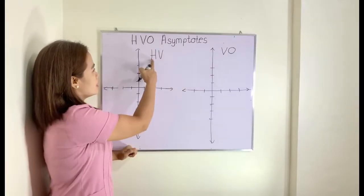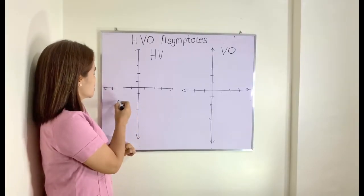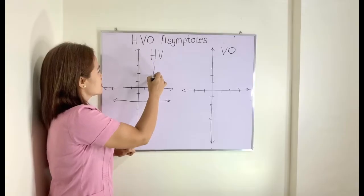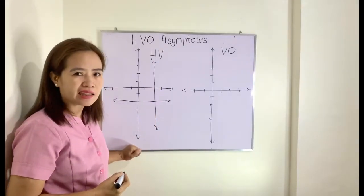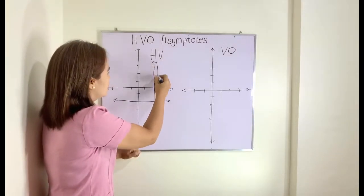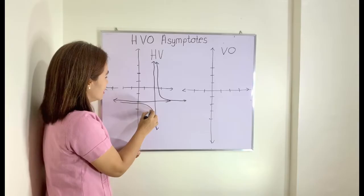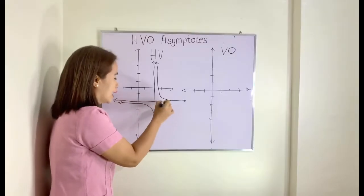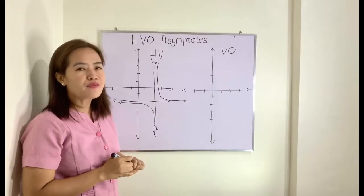HV means horizontal and vertical asymptote. A horizontal line looks like this, and a vertical line looks like this. These are always straight lines in which a graph moves closer and closer to them. The graph approaches this line, and its pair approaches this line below — but they will never intersect.